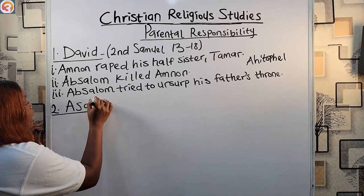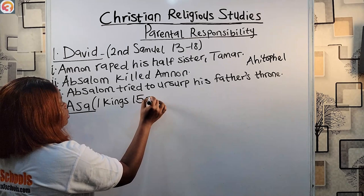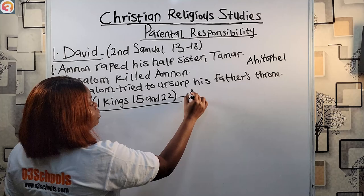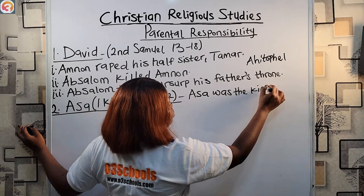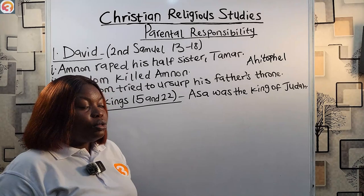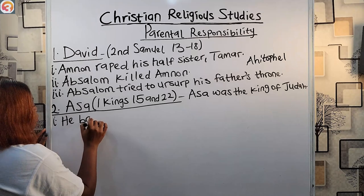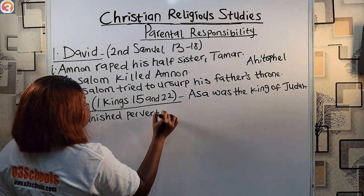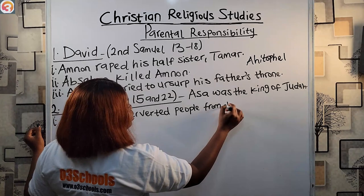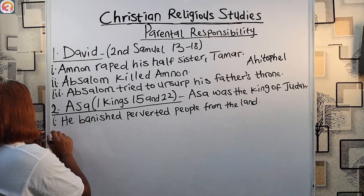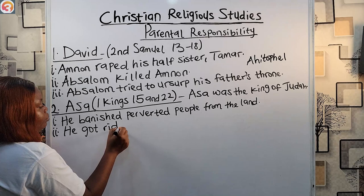Another parent to consider is Asa. This account is written in First Kings chapters 15 and 22. Asa was the king of Judah and he did what was right in the eyes of the Lord. First, Asa banished perverted people from the land. He also got rid of his father's idols.